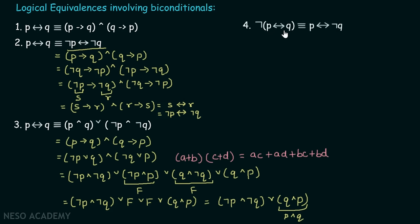The fourth biconditional equivalence: NOT(P↔Q) is equivalent to P↔NOT Q. This logical equivalence can also be proved easily using the laws we have already learned — so this will be your homework.